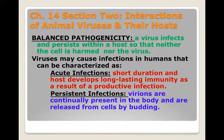Viruses that cause human infections can be characterized as causing either acute infections — called acute viruses — or persistent infections — called persistent viruses. Acute infections are short duration and the host develops long-lasting immunity, meaning if you get sick with it you won't ever get sick again. A persistent infection is different in that virions are continually present in the body; the immune system doesn't really get rid of the virus, and they're released from cells slowly over long periods of time.